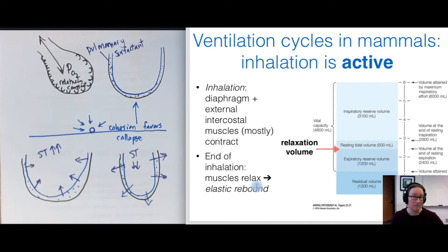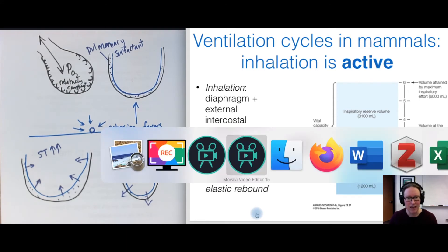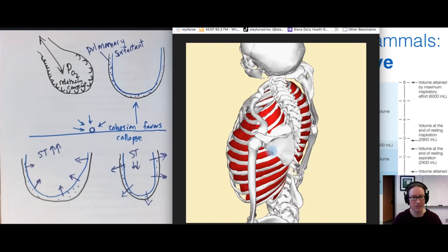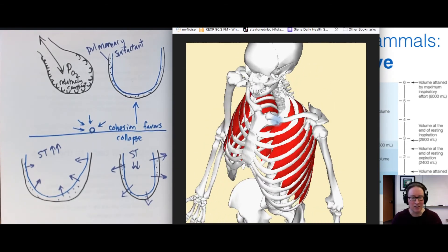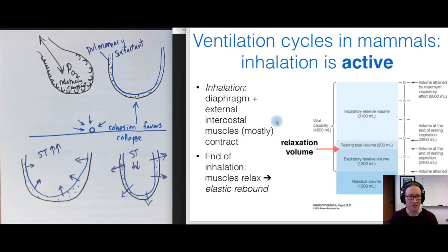In mammals, inhalation is an active process. In reptiles, elastic rebound contributes to a component of the breathing cycle, but in mammals only the inhalation phase is active. When we inhale, two muscle groups contract to expand the volume of the rib cage: the diaphragm and the external intercostal muscles — muscles located between the ribs that, when they contract, bring the ribs open and down to expand rib cage volume.